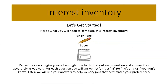Let's get started! Here's what you'll need to complete this interest inventory: a pen or pencil and some paper to write your answers down. Pause the video to give yourself enough time to think about each question and answer it as accurately as you can. For each question, you will answer A for yes, B for no, and C if you don't know.